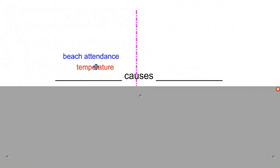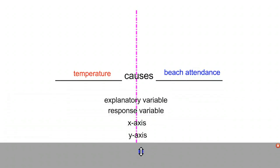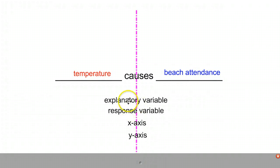People being at the beach probably do not cause the temperature, so we're going to go just like this here. And so then the explanatory variable is going to be temperature, because it explains beach attendance, or at least that's what we presume.